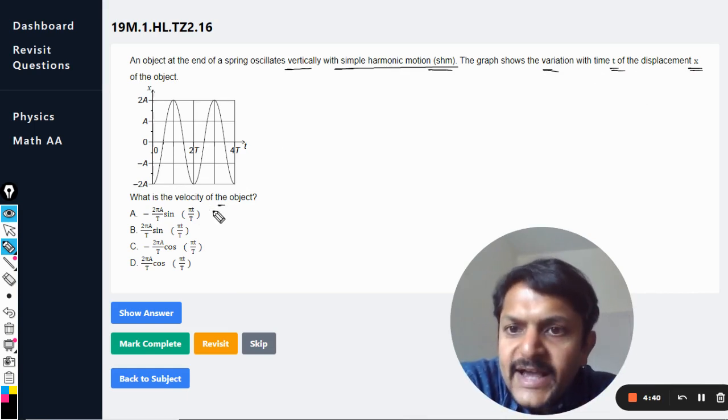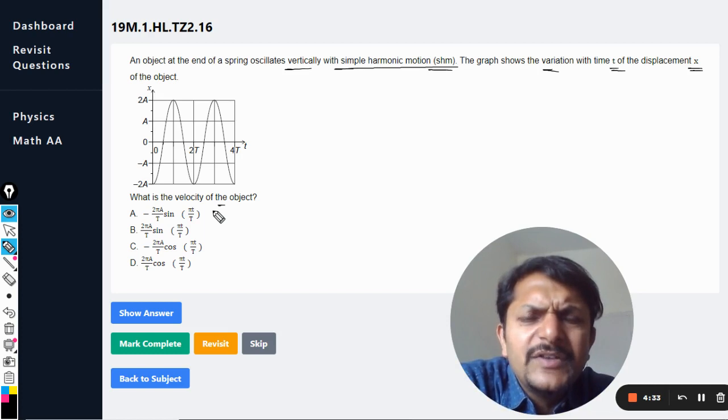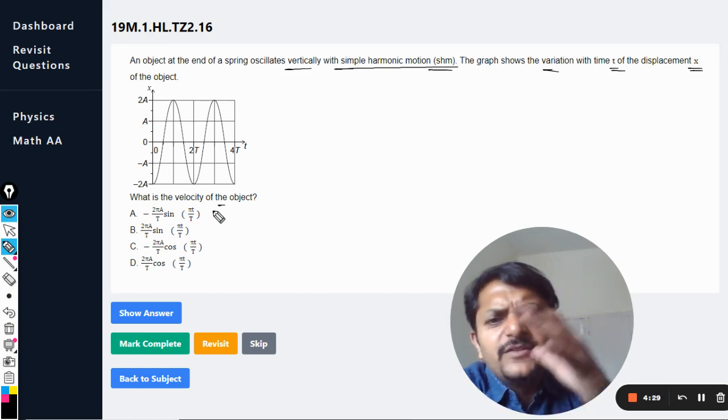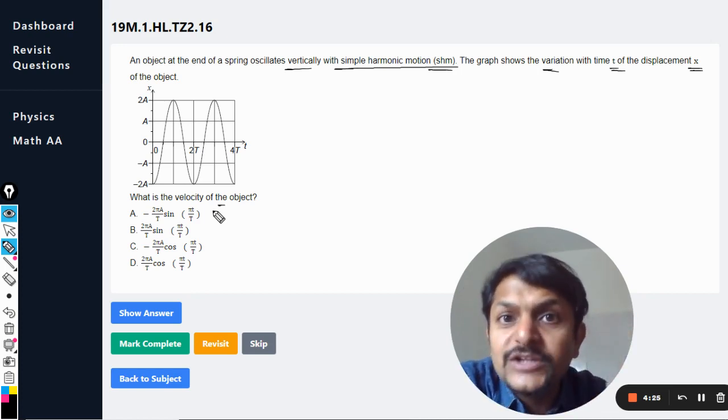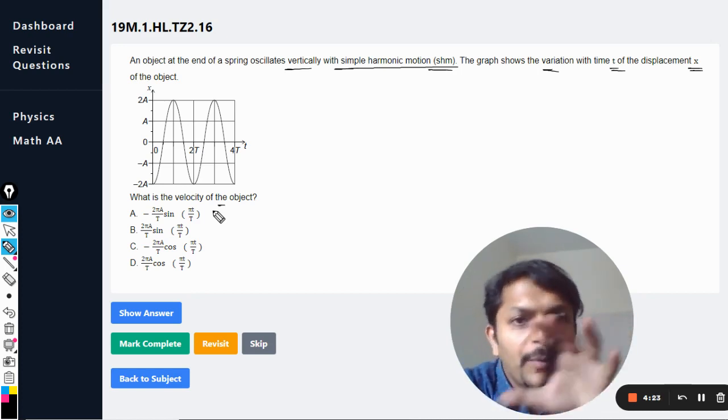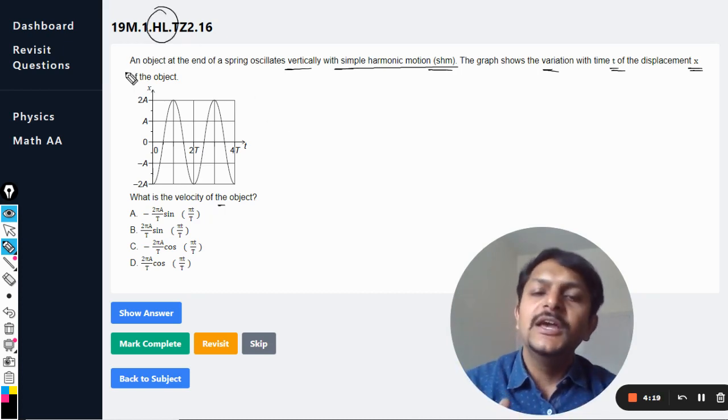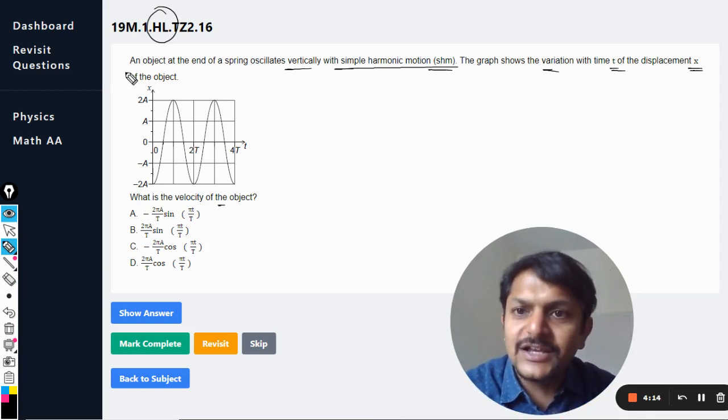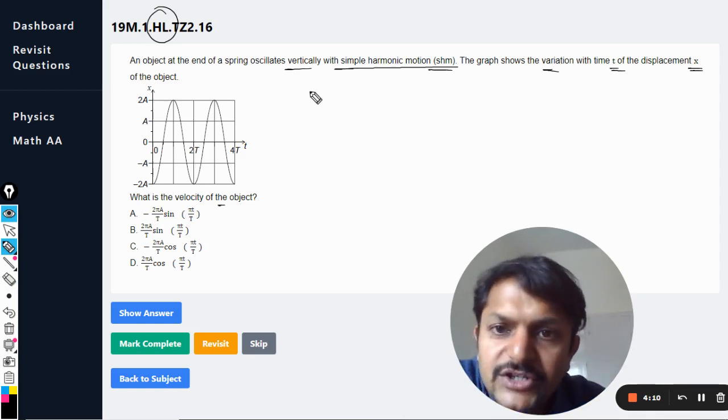Okay, so this x is the displacement and we need to comment on the velocity. Fine. So there are many methods which can be used here, but I believe the first step that we should do here is creating the equation for the displacement from the graph. So this question is from HL, so we will not be shunning away from creating equations, because that is part of our syllabus now.